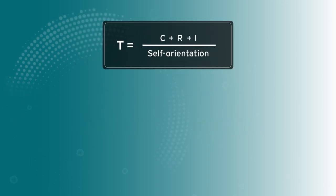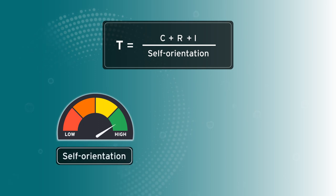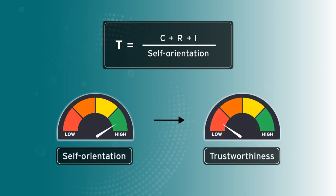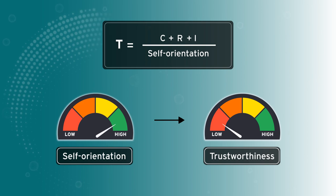Self-orientation goes the other way. A high level of self-orientation results in a low level of trustworthiness. This is the one factor that significantly cuts trustworthiness, regardless of how great a person is with credibility, reliability, and intimacy.